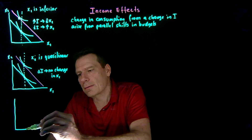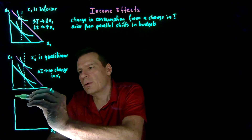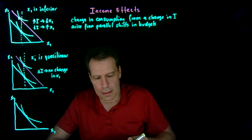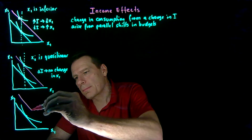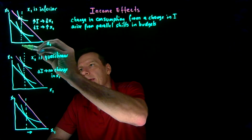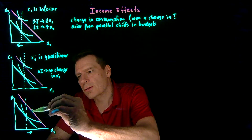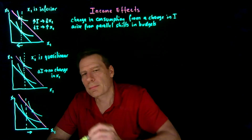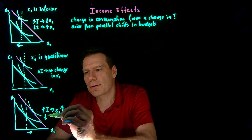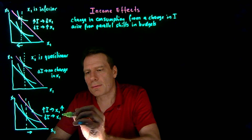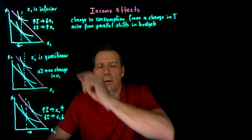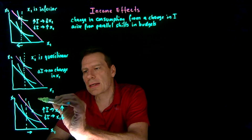Or it might be the case that x1 is like the steak I mentioned, and when income goes up, our consumer buys more of it. So if this was her original bundle, it might be that as income goes up she decides she'd really like to be buying more of the x1 good — not less, as we had in the case of an inferior good. Her new tangency would be somewhere over here. As income goes up, her consumption of x1 goes up; as income goes down, her consumption of x1 goes down. The consumption of x1 moves in the same direction as income. In this case, we would say that x1 is a normal good.